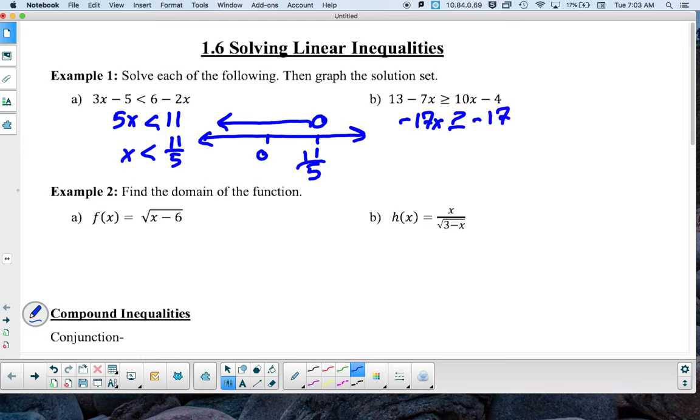Now when we divide by a negative with inequalities, something special happens. So when we divide by negative 17, then we have to switch the way that our inequality is facing. Negative 17 divided by negative 17 is positive 1. So then we have x is less than or equal to 1.